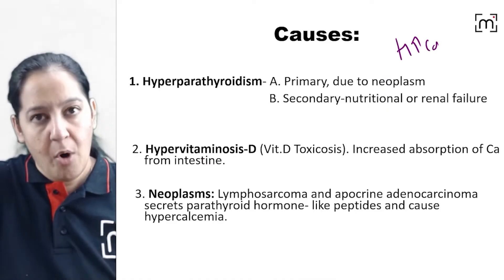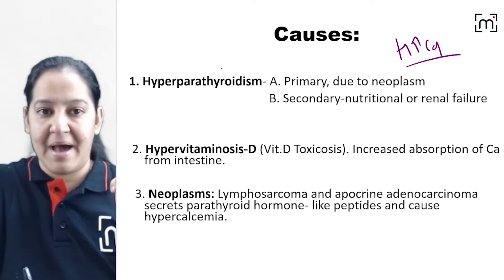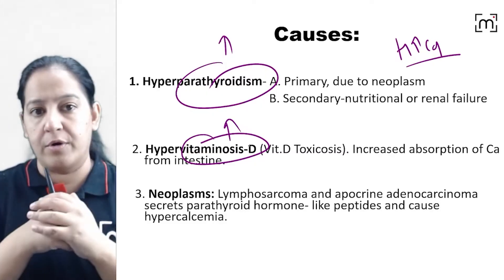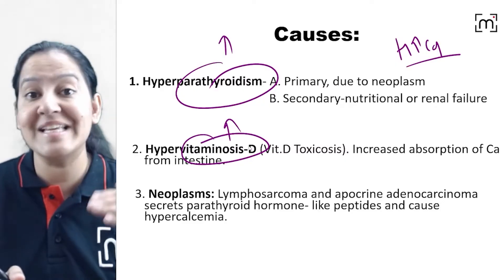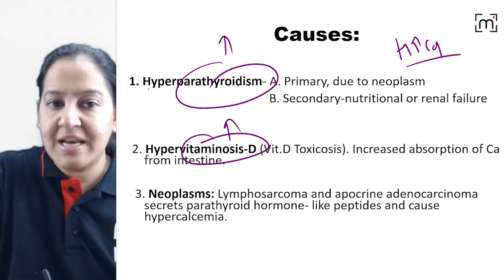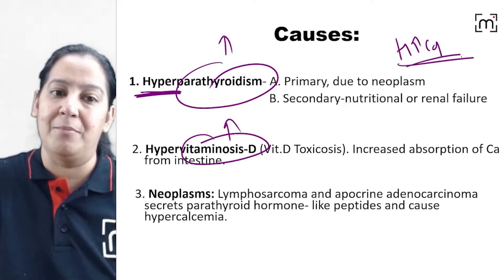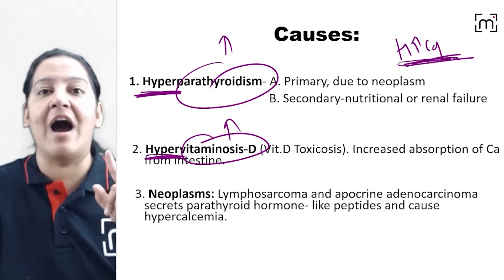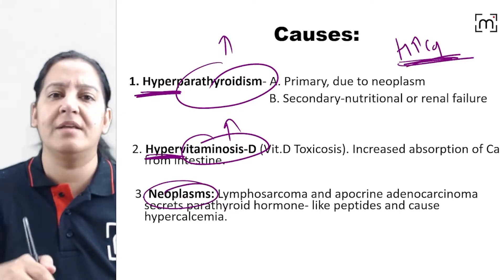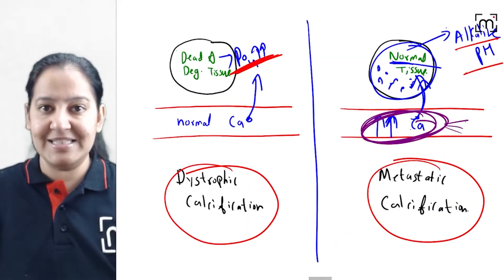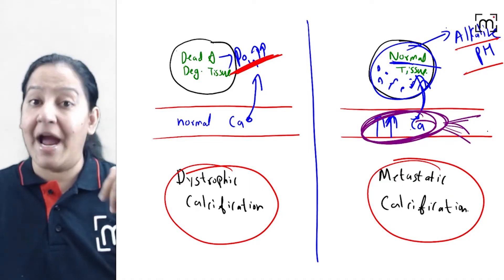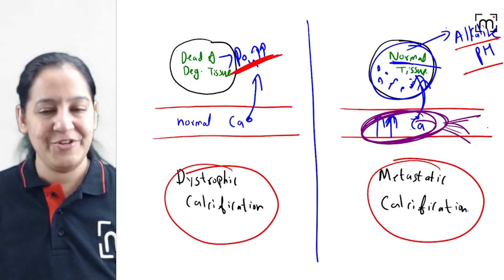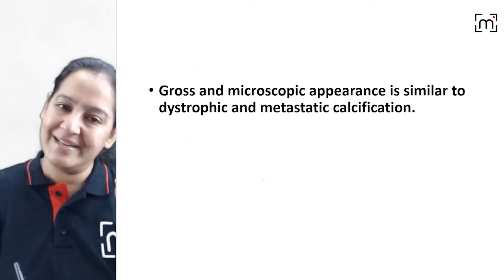The causes of hypercalcemia: calcium levels depend on parathyroid hormone and vitamin D. If either is elevated, calcium absorption increases. The three causes of hypercalcemia are: hyperparathyroidism, hypervitaminosis D, and certain neoplasms. These conditions lead to elevated blood calcium, which then precipitates in alkaline tissues, causing metastatic calcification.